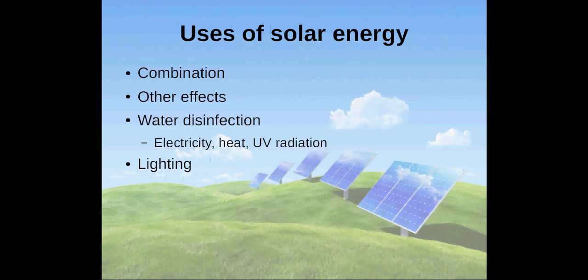Apart from these three general ways of harnessing the sun's power, it is also possible to use a combination of them or other effects. For example, this is the case with water disinfection, which can be done using electricity, heat, or ultraviolet radiation.